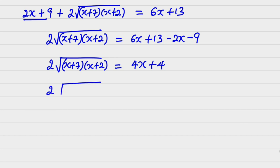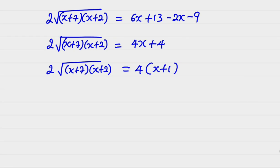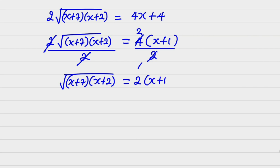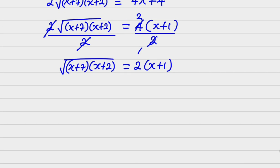Dividing both sides by 2: root of (x plus 7)(x plus 2) equals 2(x plus 1). Now I square both sides again to remove the square root, giving: (x plus 7)(x plus 2) equals 4(x plus 1) squared.